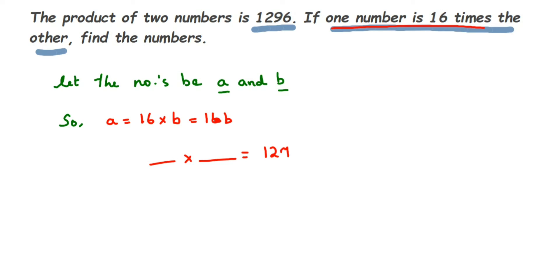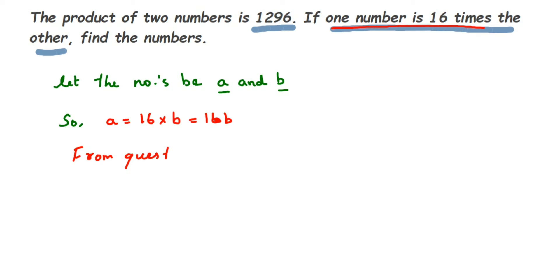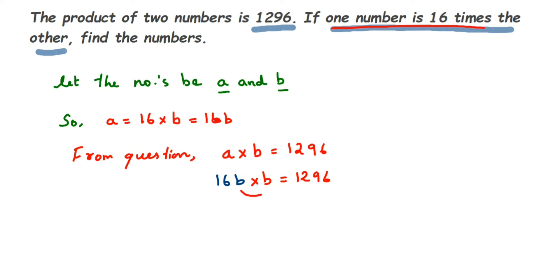When you multiply these two numbers the answer is 1296. The first number is a and the second number is b, but in place of a we're going to use the relationship. So we write 16b times b equals 1296, substituting a = 16b into the product equation.